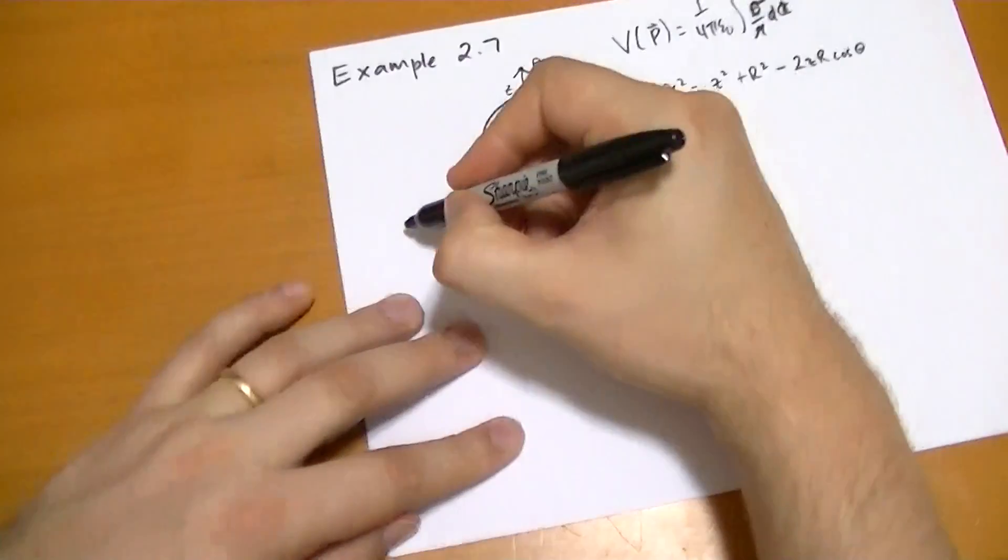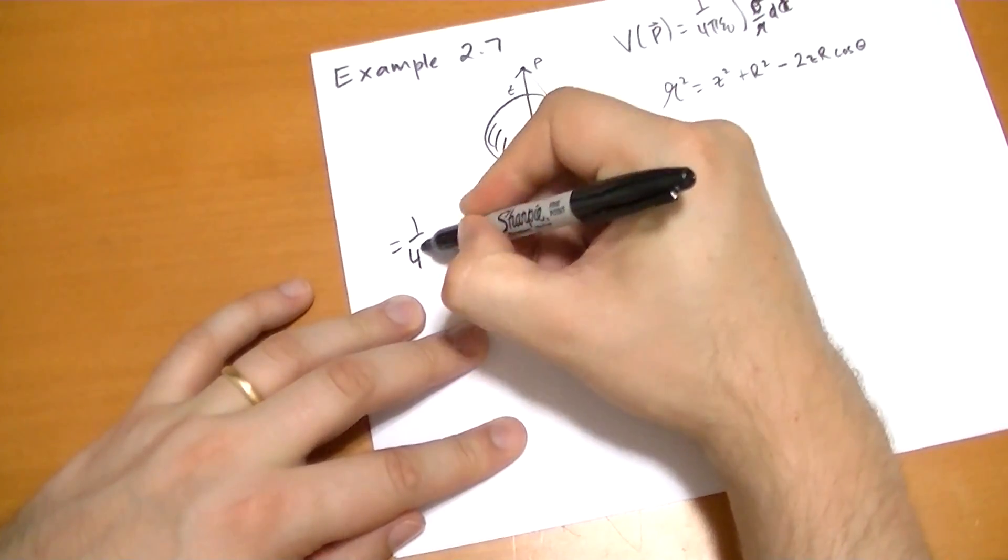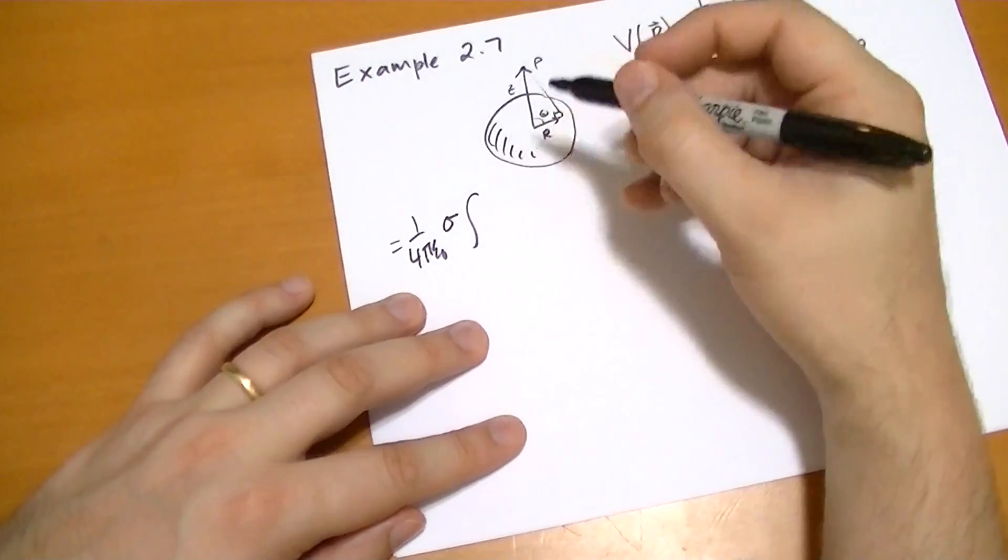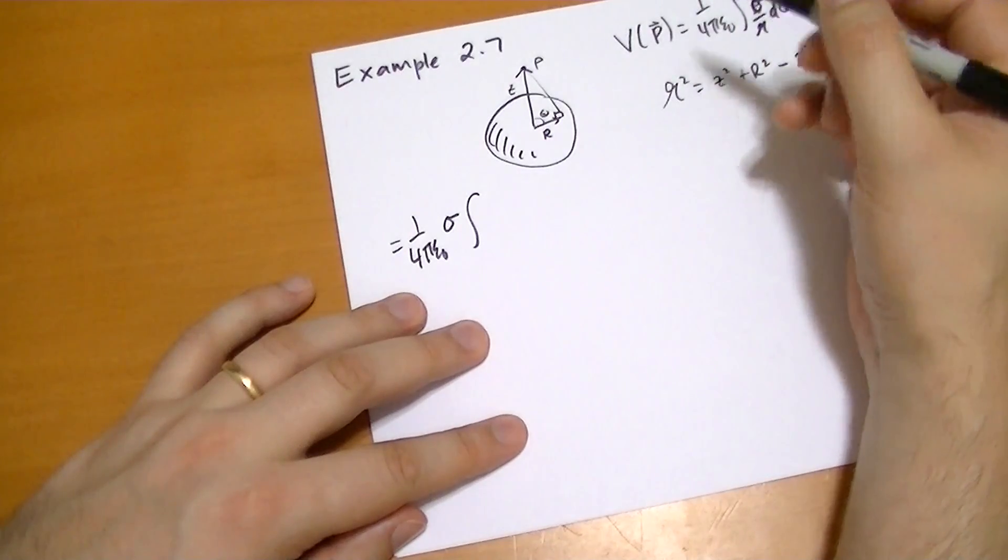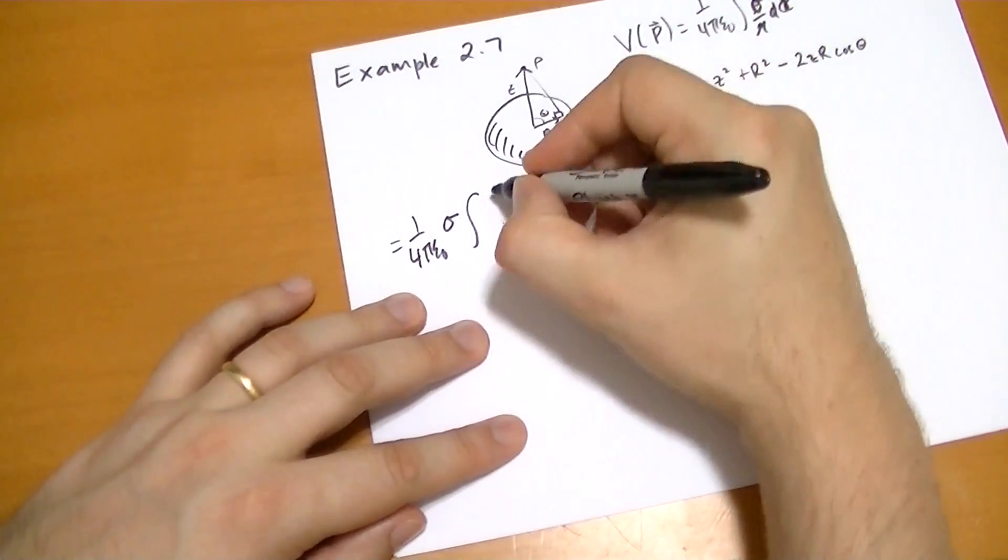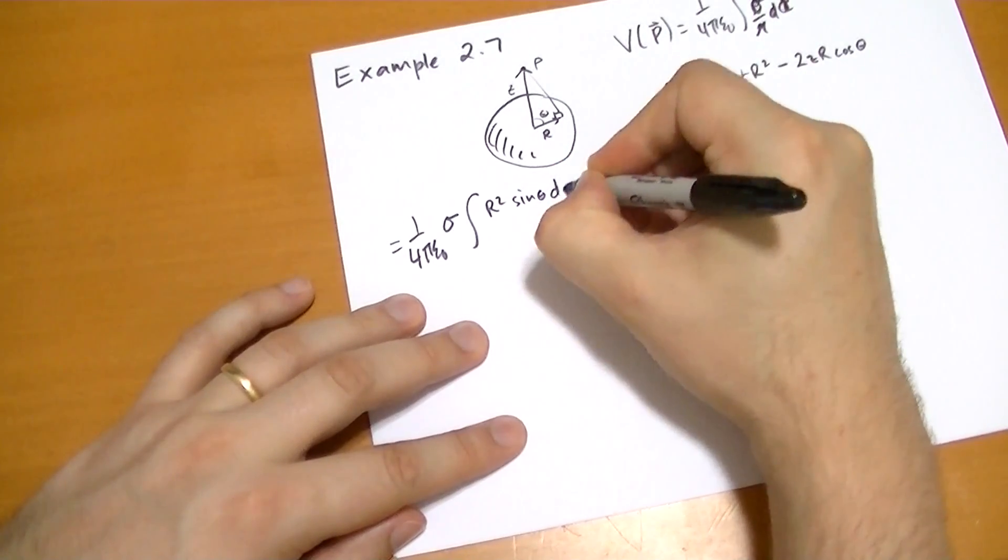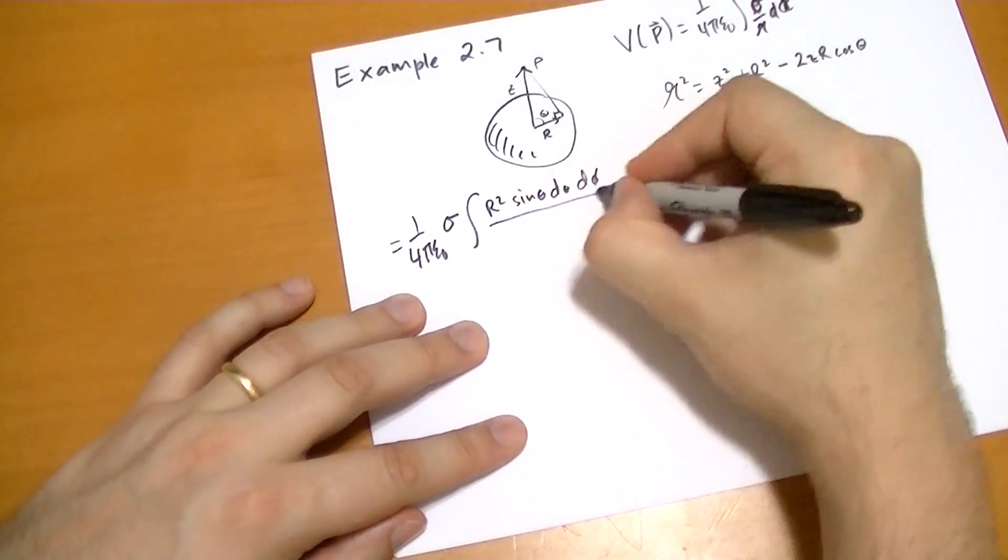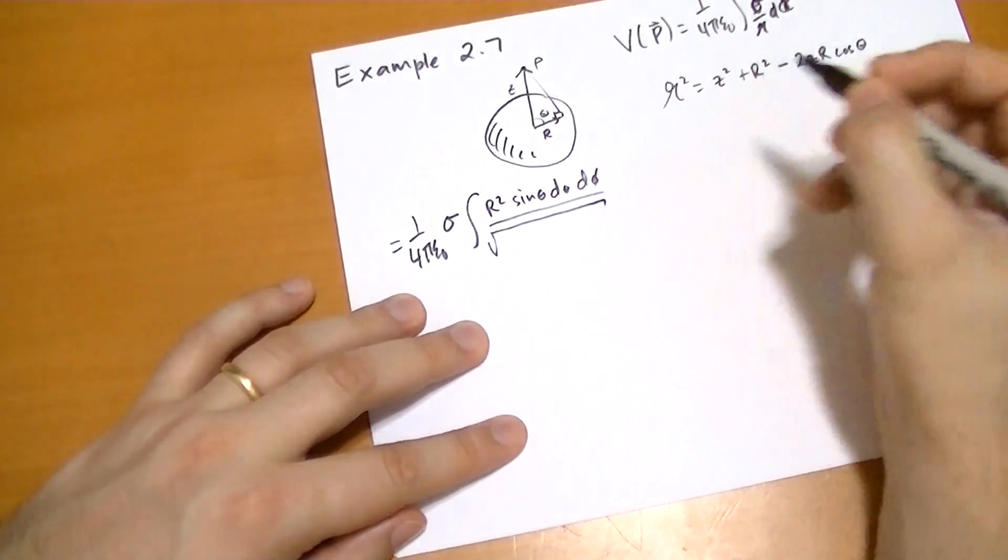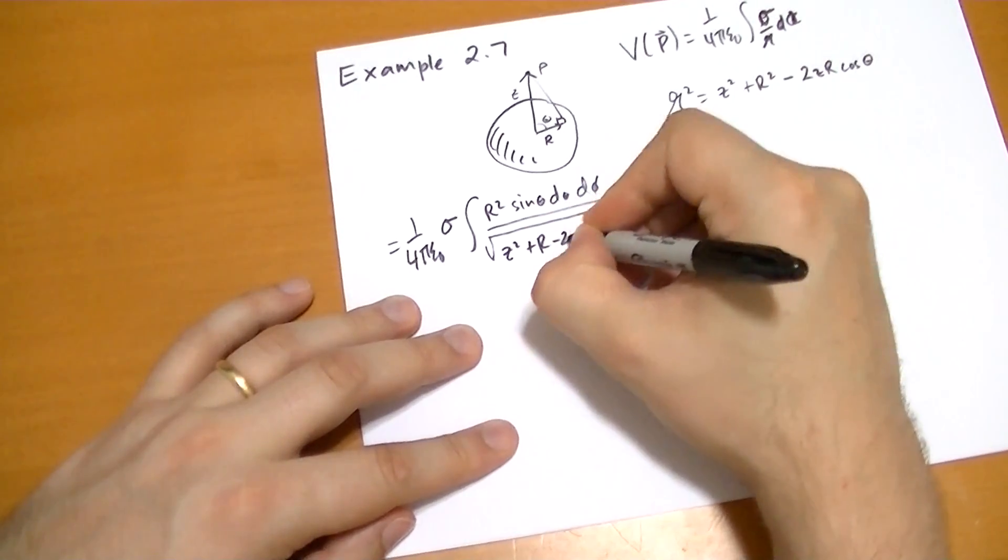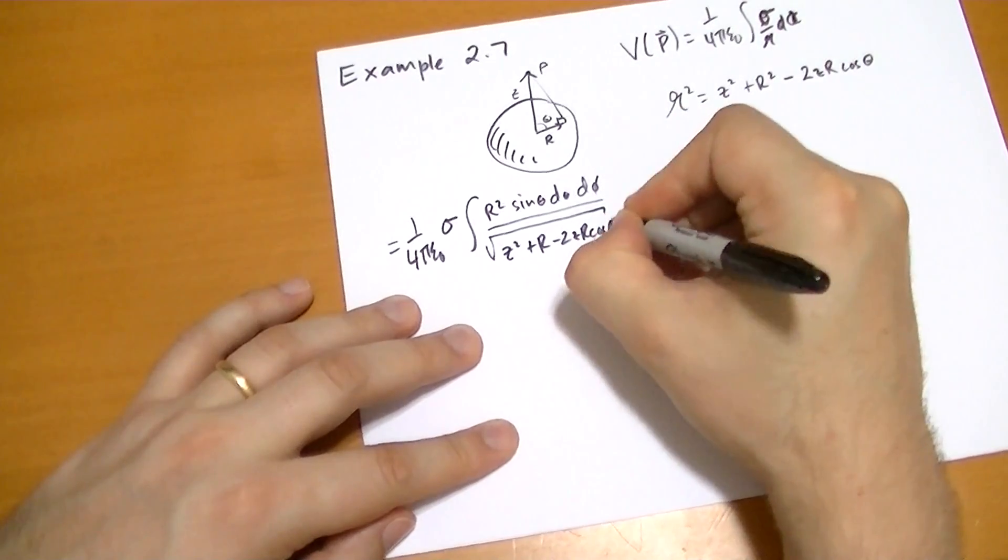And the integral is going to be rather easy to solve. So we have sigma comes out, and then we have the surface integral. The surface area dA is equal to r squared sin theta d theta d phi, and that's all over the square root of z squared plus r squared minus 2zr cos theta.